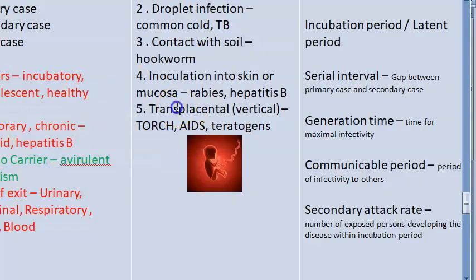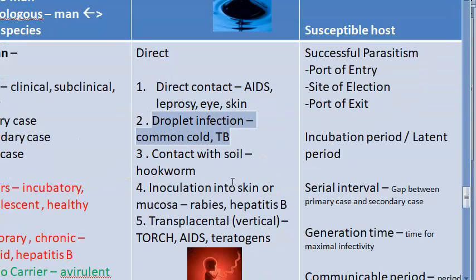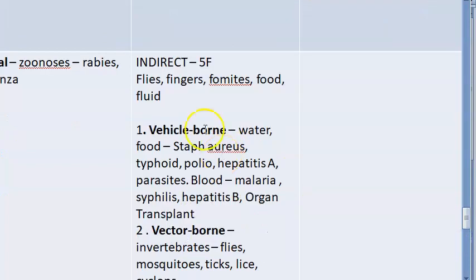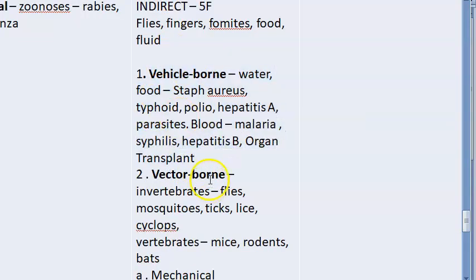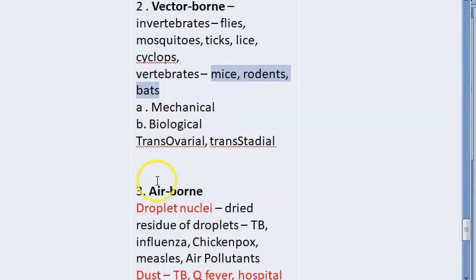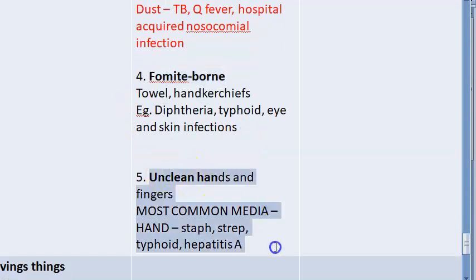We're done with direct transmission. Direct means you directly touch somebody or have droplet infection, contact with soil, dog bite, inoculation, or transplacental. Now looking at indirect: vehicle-borne includes water, food, and blood. Vector-borne includes mosquitoes and other vectors. Airborne, and fomite-borne are also indirect.